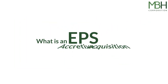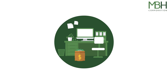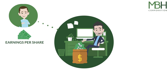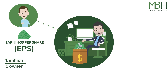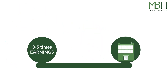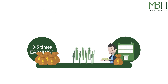What is an EPS accretive acquisition? Imagine you have a small business making a million in profit and, like many small businesses, it has one owner and one share. The earnings per share, known as EPS, is that one million divided by one share, which is still one million. Typically a small business might be valued at three to five times its earnings, meaning the one million profit is worth three to five million to the owner if they can find a buyer.